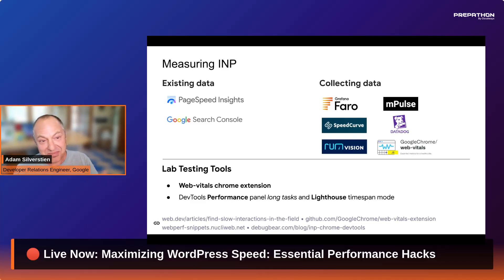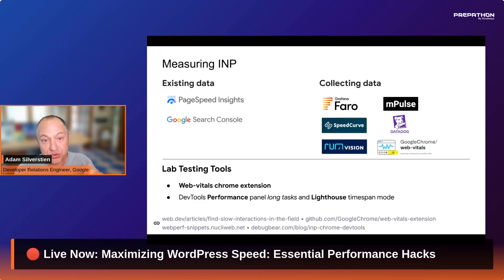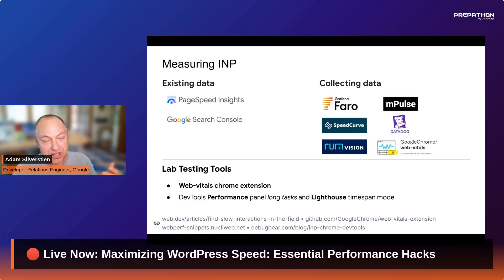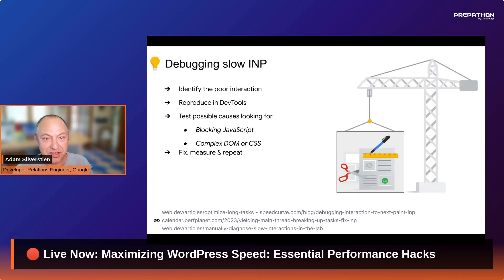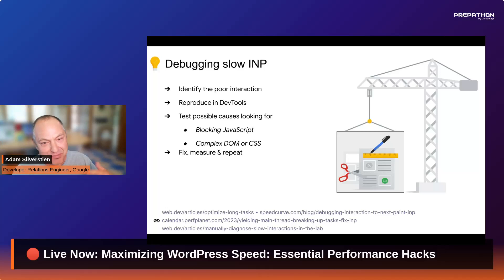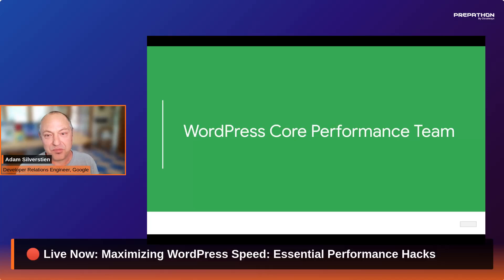There are also tools specific for collecting real user metrics, because INP only happens in the field with real users — it's very difficult to measure in a lab since it requires actual interactions. Once you've identified a poor interaction, you can use lab testing with browser throttling and dev tools to test changes. The basic process is: make small changes, test to see if it's fixed, and repeat. There are great articles linked in the slides, but in the interest of time, moving on to the WordPress Core Performance Team.